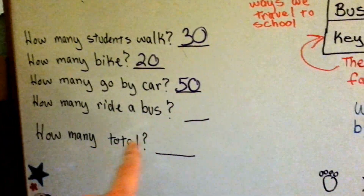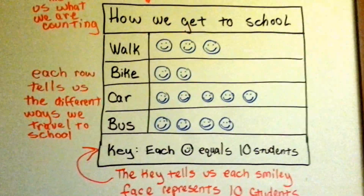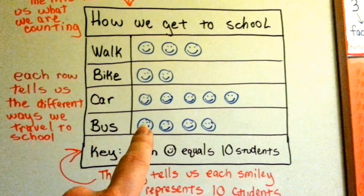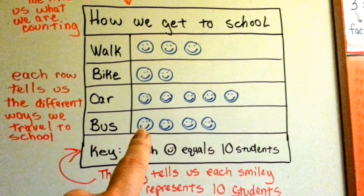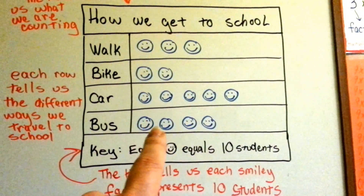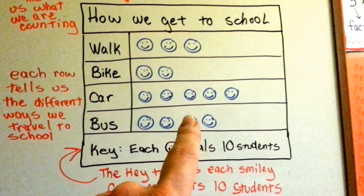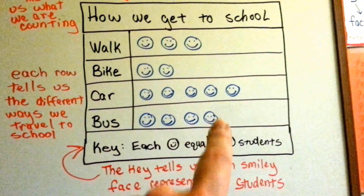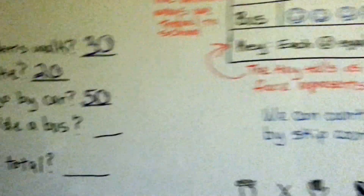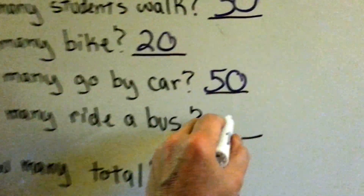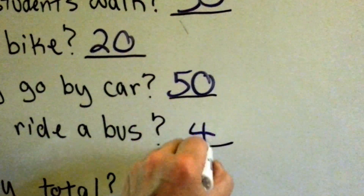How many ride a bus to school? How many ride a school bus? Skip count by tens: ten, twenty, thirty, forty. Forty of them go by school bus.